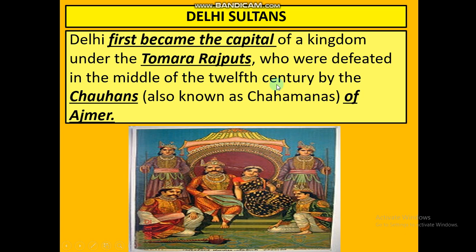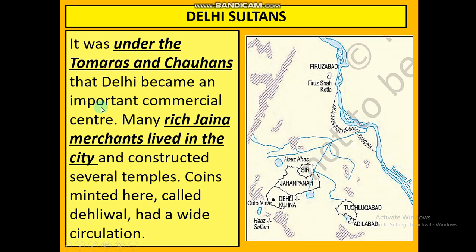Delhi first became the capital of a kingdom under the Tomar Rajputs, who were then defeated in the middle of the 12th century by the Chohans. They were also known as Chahamanas, and they were of Ajmir. The famous ruler of the Chohan dynasty was Prithviraj Chohan. It was under the Tomar and Chohan that Delhi became an important commercial centre — a place where a lot of business activities were taking place.